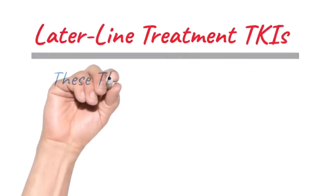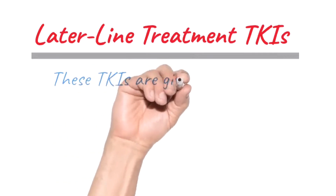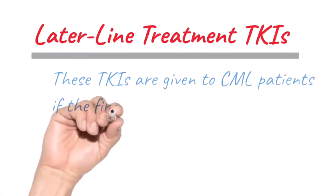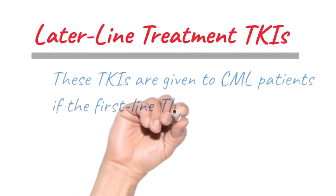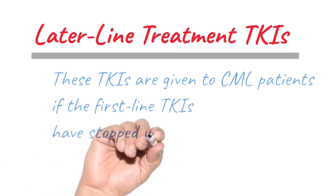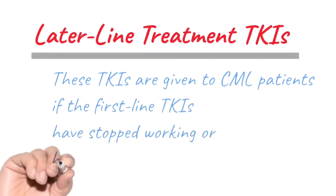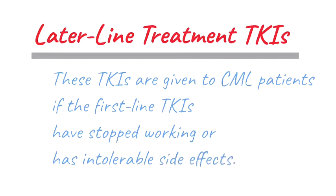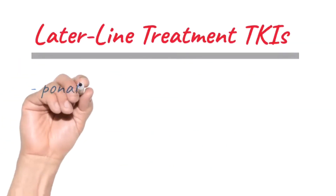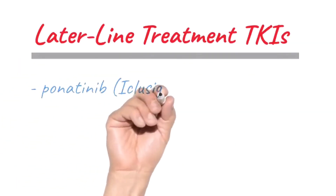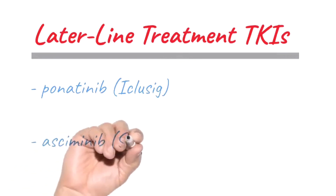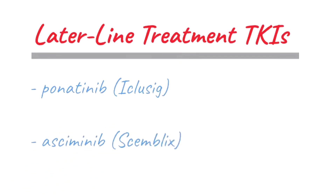Later-line treatment TKIs are given to CML patients if the first-line TKIs have stopped working or have intolerable side effects. These later-line treatment TKIs are Ponatinib (Iclusig), Asciminib (Scemblix).